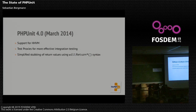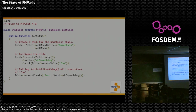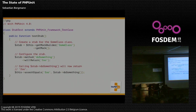We simplified stubbing of return values using the willReturn syntax — a pull request that had been lingering for about one-and-a-half years. Nowadays something like this would be available within eight weeks. Before, you needed three lines of code just to stub something. With PHPUnit 4.0 and forward you only need two lines, and it's easier to read since we're just setting up a stub return value, not setting an expectation.